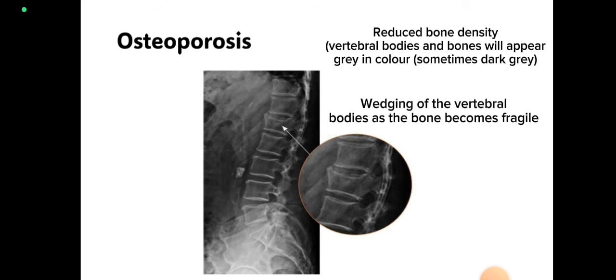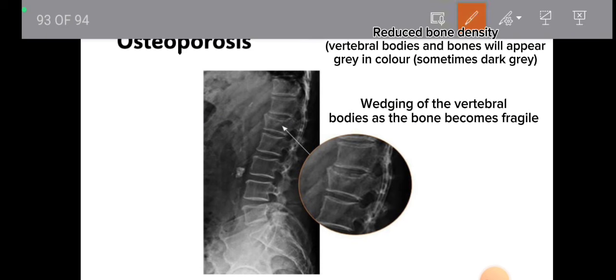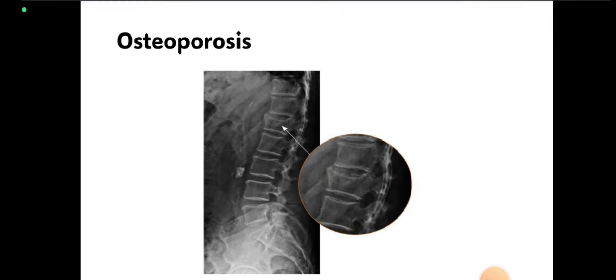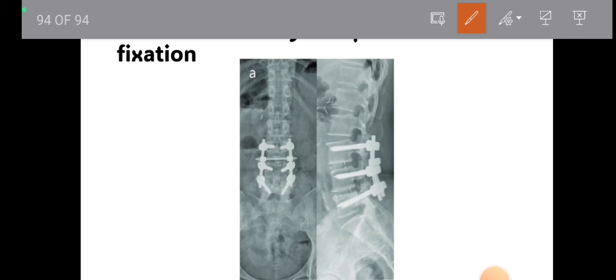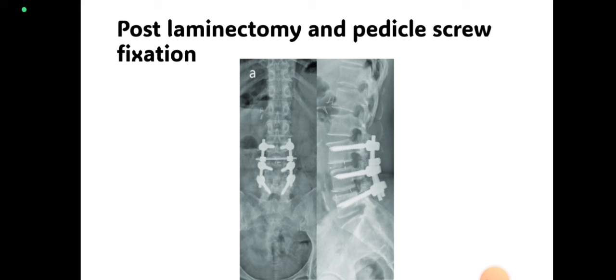Osteoporosis is reduced bone density. When bone density is reduced, it appears as a darker shadow — somewhat gray rather than the normal white structure. Less density reflects a grayer shadow on the x-ray film; high density gives a white shadow. Here is an image of postoperative laminectomy and pedicle screw fixation — metal implants are placed in lumbar vertebrae. As we discussed, metal appears as a bright white shadow due to high density, and here you can easily differentiate between metals and bones.